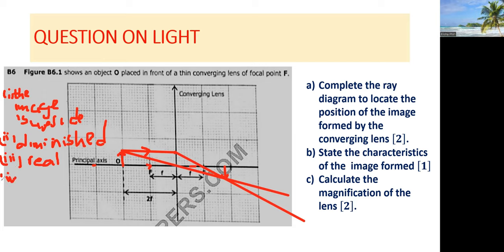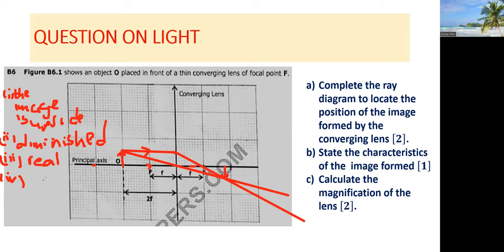The fourth characteristic is the location of the image. The image is formed on the other side of the lens — that is, behind the lens — on the opposite side from the object.